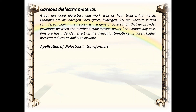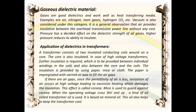A transformer consists of two insulated conducting coils wound on a core, which is also insulated. In high voltage transformers, further insulation is required between individual windings in the coils and between the core and coils. Insulation is provided using paper, mica, or cloth, with the paper impregnated with varnish or wax to fill air gaps. Air gaps can lead to ionization at high voltage causing excessive heating — this effect is called corona. Mica is used to guard against corona when the operating voltage exceeds 3 kV, and transformer oil (based on mineral oil) is also used, which helps keep the transformer cool.